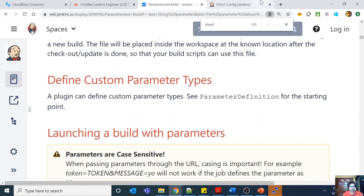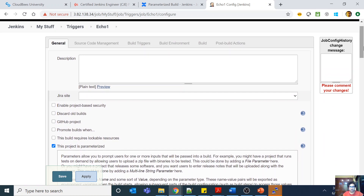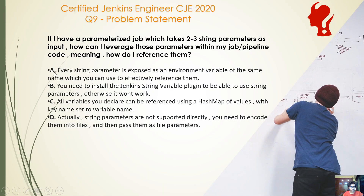There are also other custom parameter types. Parameterized jobs are important both for knowing Jenkins and for this exam. The correct answer is A: every string parameter is exposed as an environment variable of the same name. Option B — the Jenkins string variable plugin — there is no such plugin. Option C — referencing via a hash map — is incorrect; there is no hash map. You just use the environment variable syntax, whether that's shell, Windows batch, or PowerShell syntax.